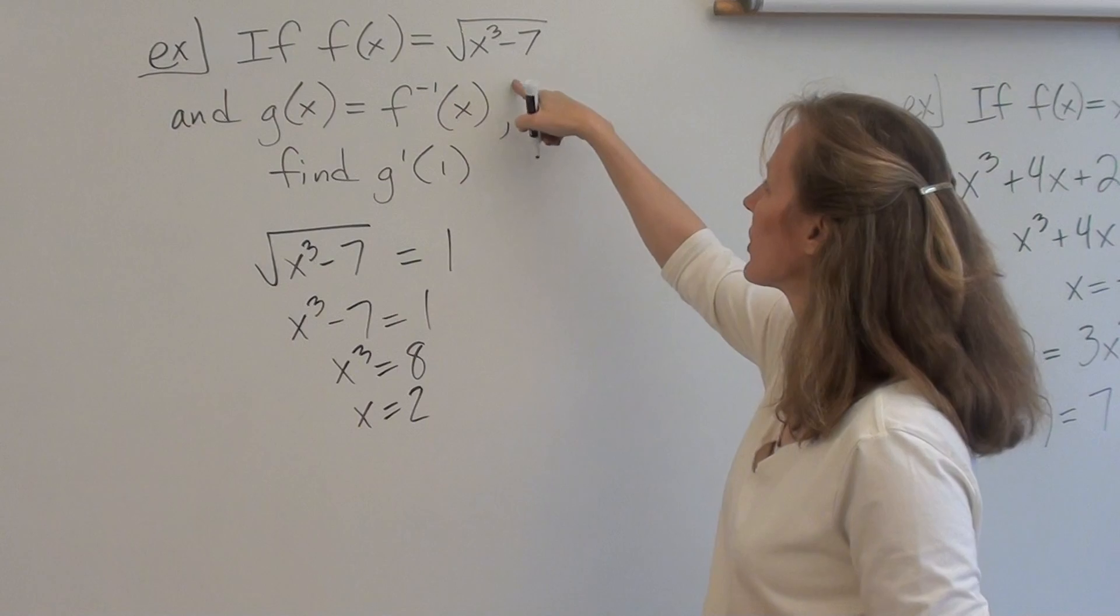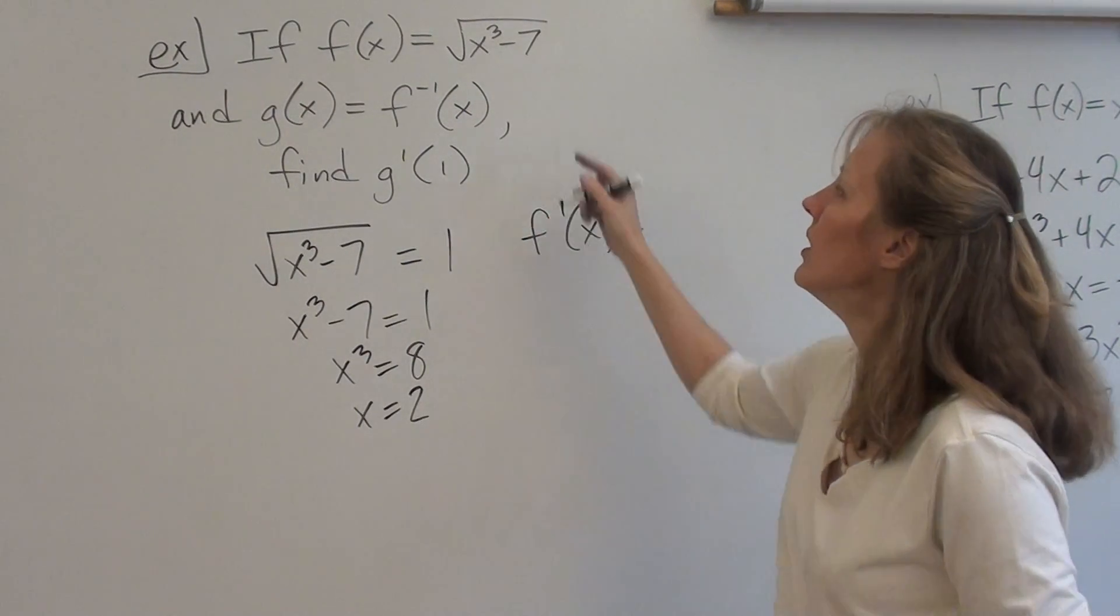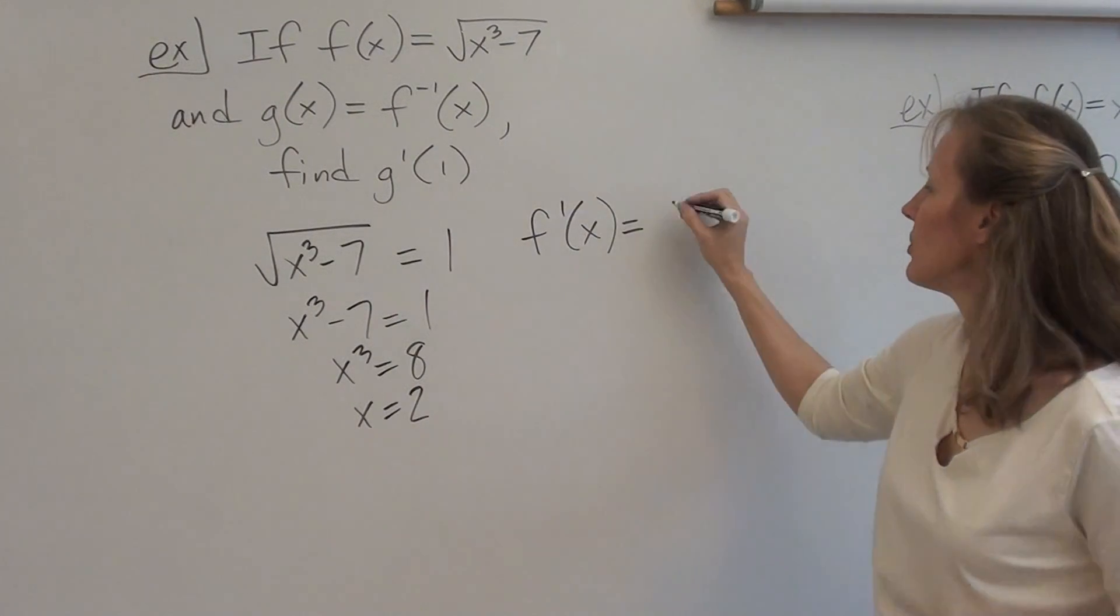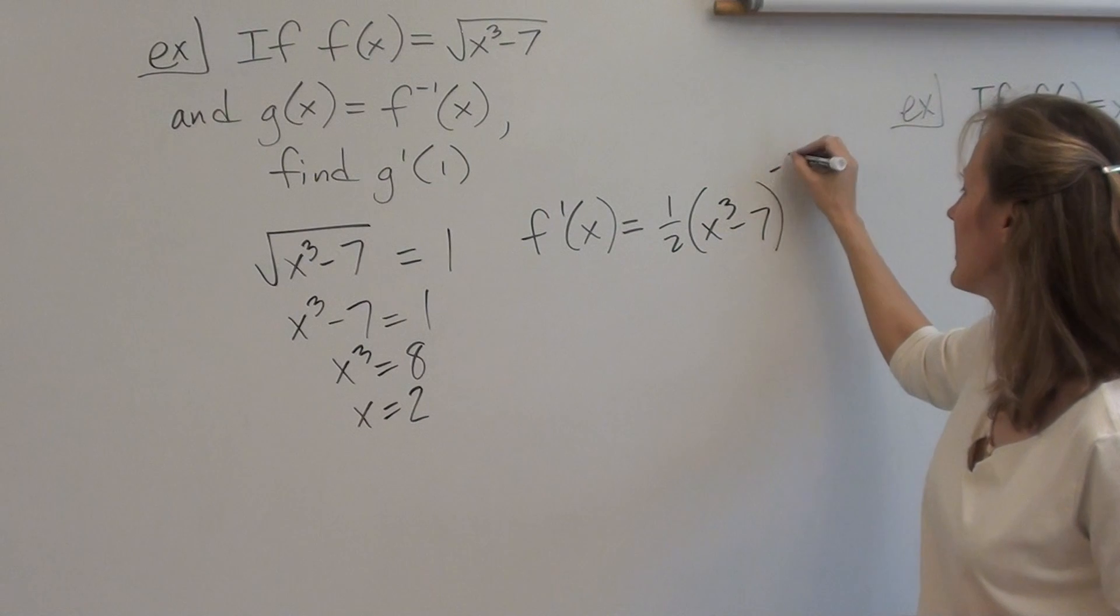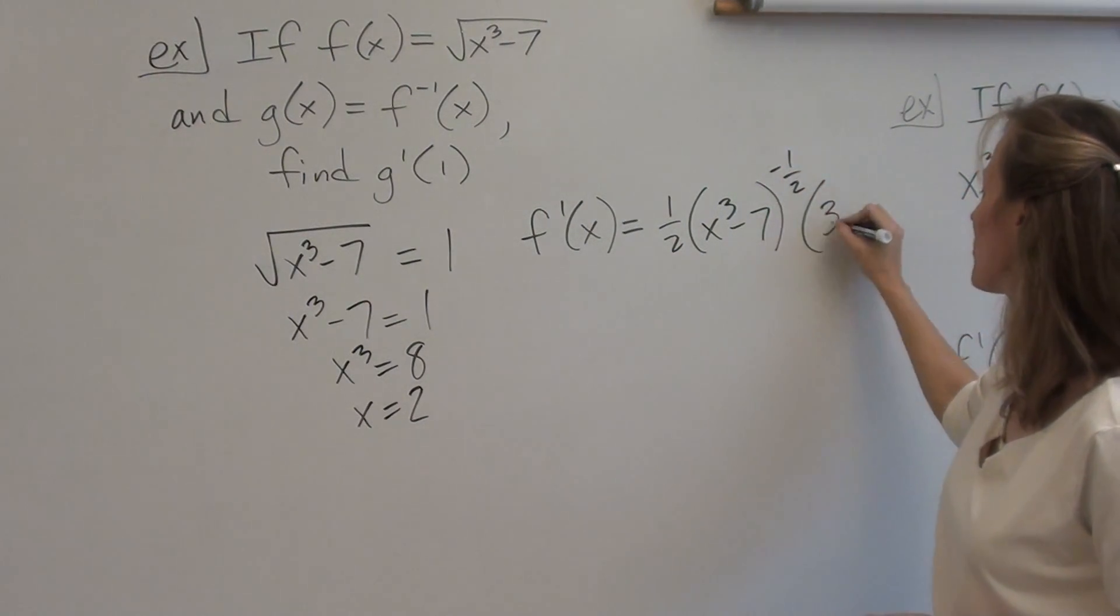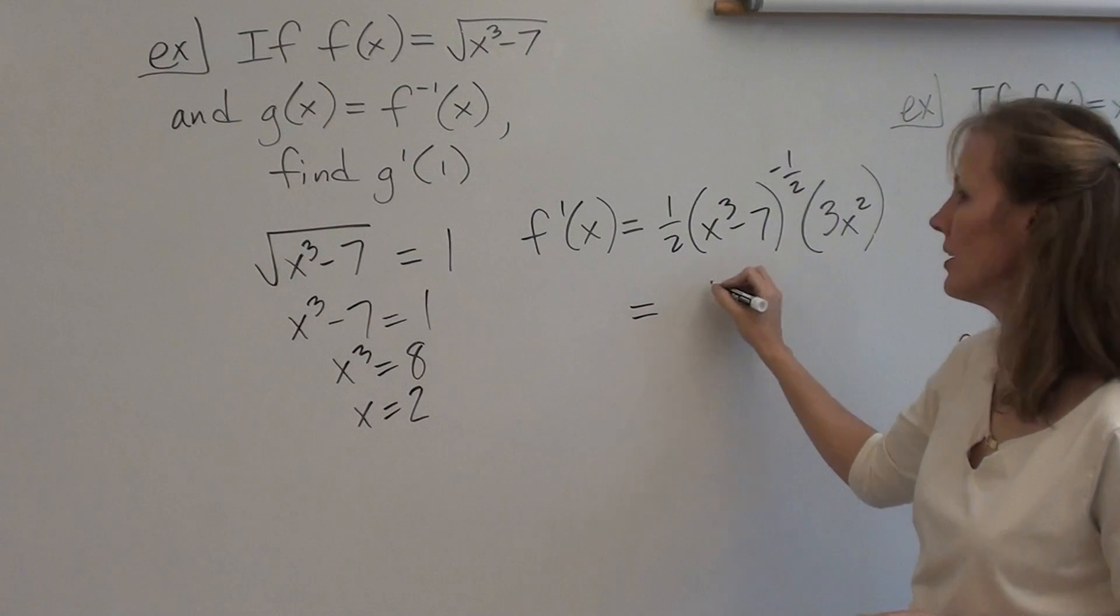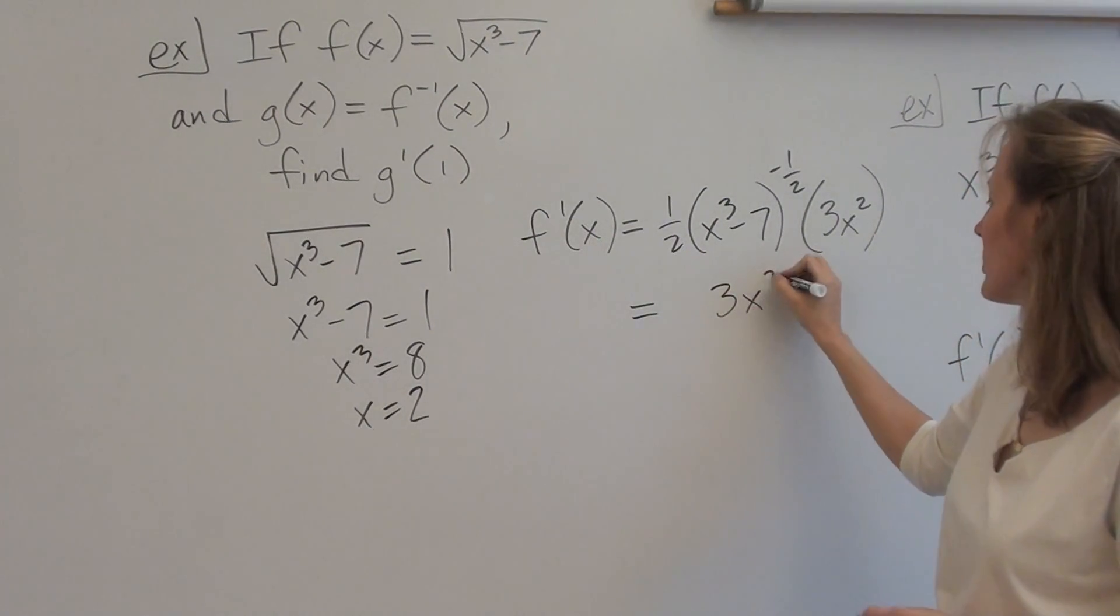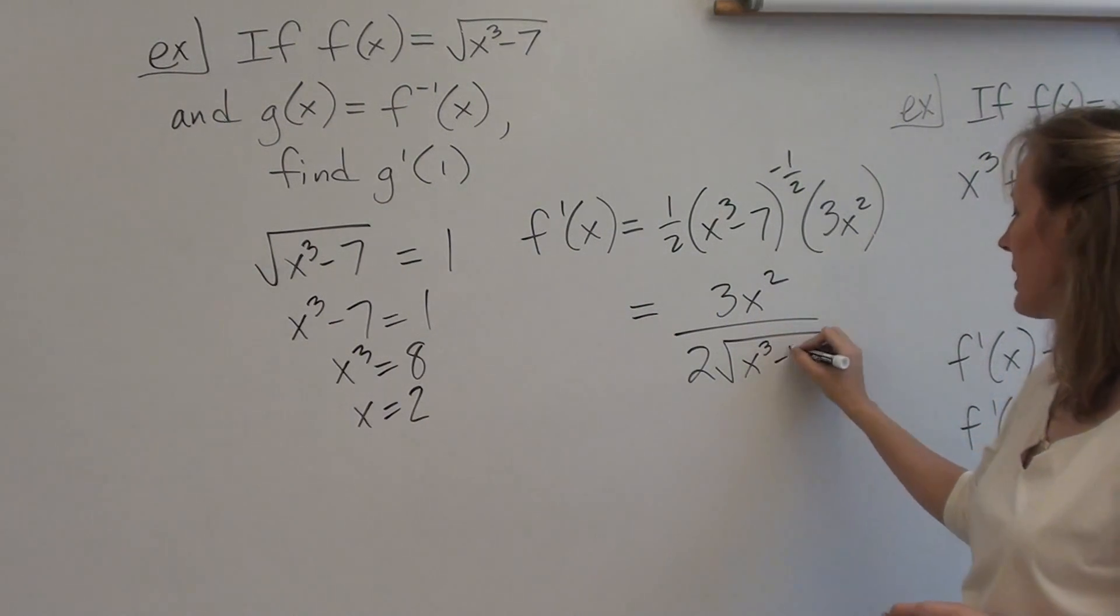Next step, we're going to find f prime. In order to do this, we have to use chain rule. So we do 1 half times x cubed minus 7 to the negative 1 half times 3x squared. If we clean that up a little bit, we get 3x squared over 2 root x cubed minus 7.